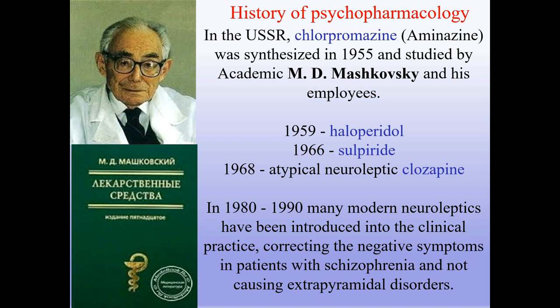In 1959, haloperidol was introduced. In 1966, sulpiride. In 1968, atypical neuroleptic clozapine. In the 1980s–1990s, many modern neuroleptics were introduced into clinical practice, correcting the negative symptoms in patients with schizophrenia without causing extrapyramidal disorders.